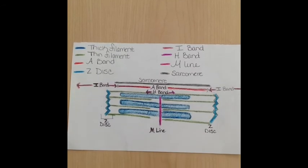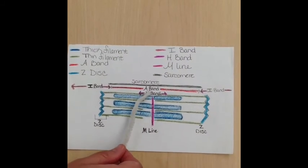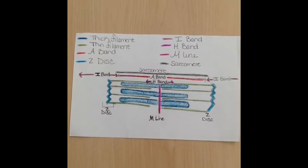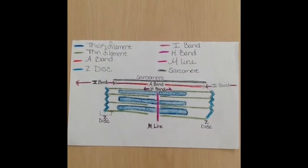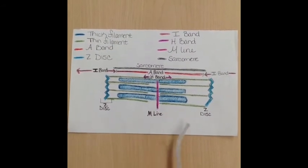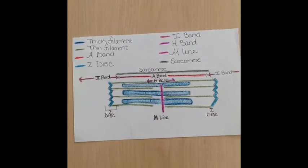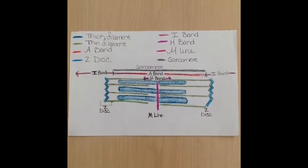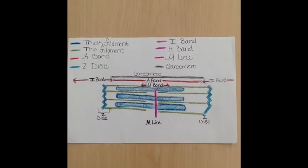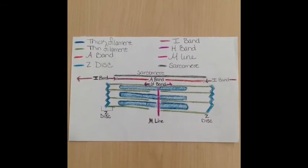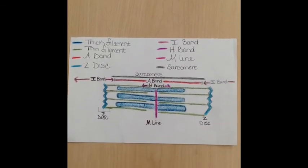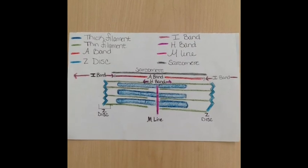The sarcomere is composed of bands. The A-band is dark and composed of thick filaments that partly overlap thin filaments. The I-band is a light band composed of thin filaments only. The Z-line or Z-disc goes through the I-band and attaches thin filaments. The H-band is found in the middle of the A-band where thin filaments do not reach. The M-band goes down the center, which is a line of protein where the thick filaments are allowed to attach.